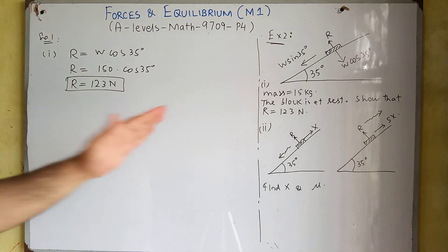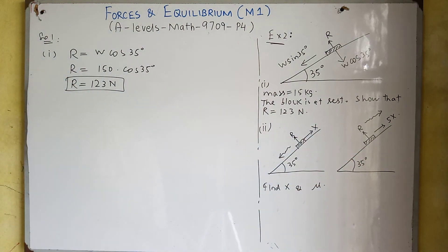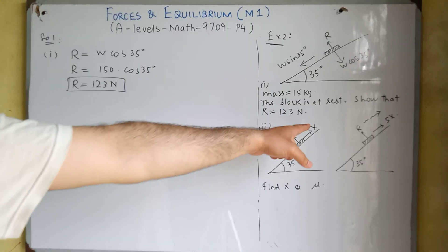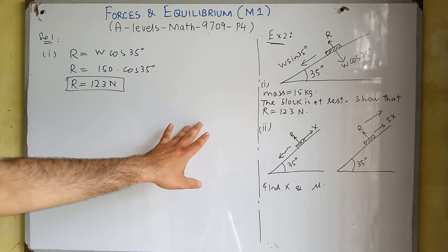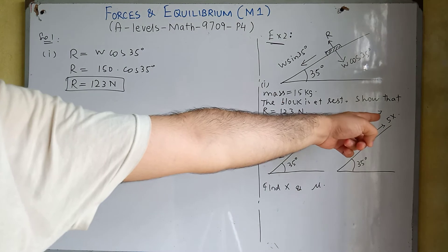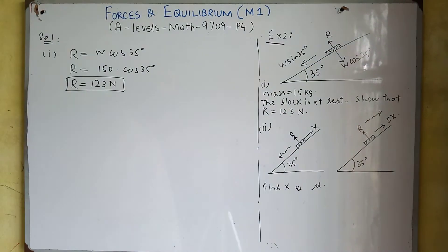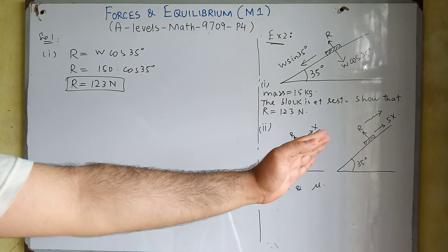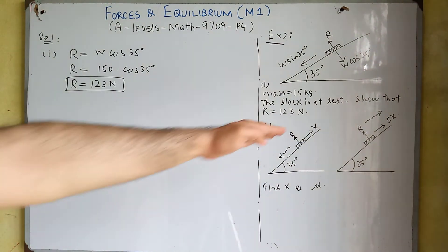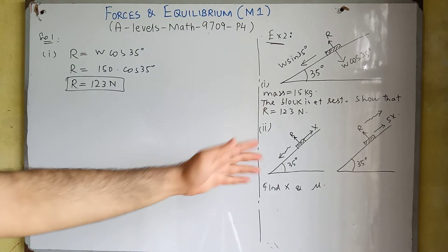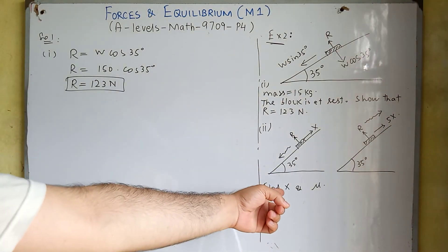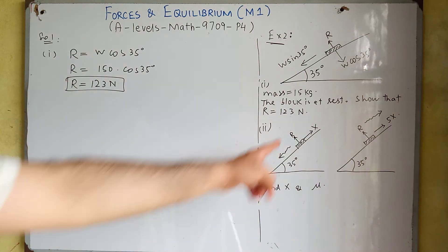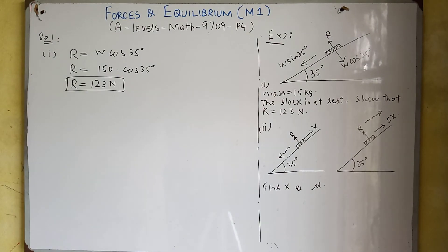In the second part, we have the same object. If we apply a force X, the body starts moving downward, and if we apply a force 5X, the body starts moving upward. We need to find the value of force X and the coefficient of friction between the block and the surface.